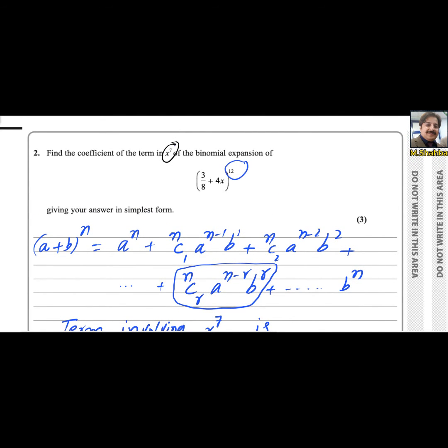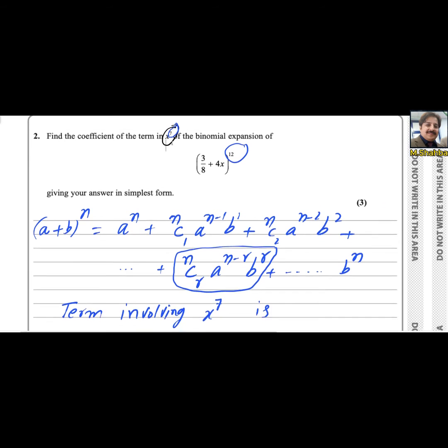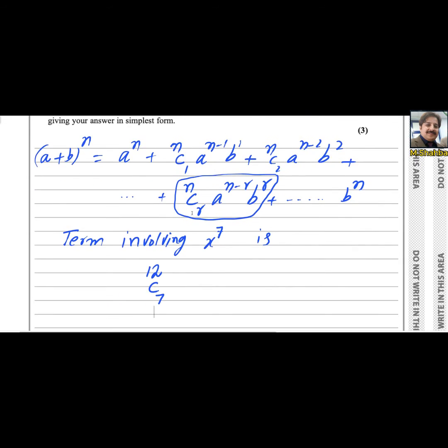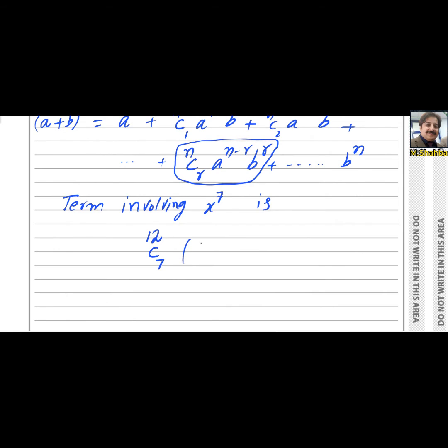And r is this. So we can use this one. It will be 12C7 and a is 3 over 8, so it will be 3 over 8 because here is n minus r, so it will be 12 minus 7.